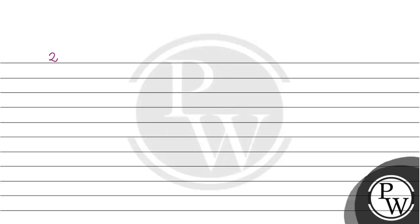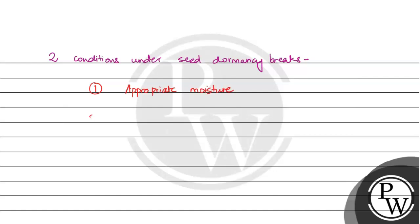So there are two conditions under which seed dormancy breaks. First is appropriate moisture and the second is temperature. Under both these conditions, seed dormancy breaks.